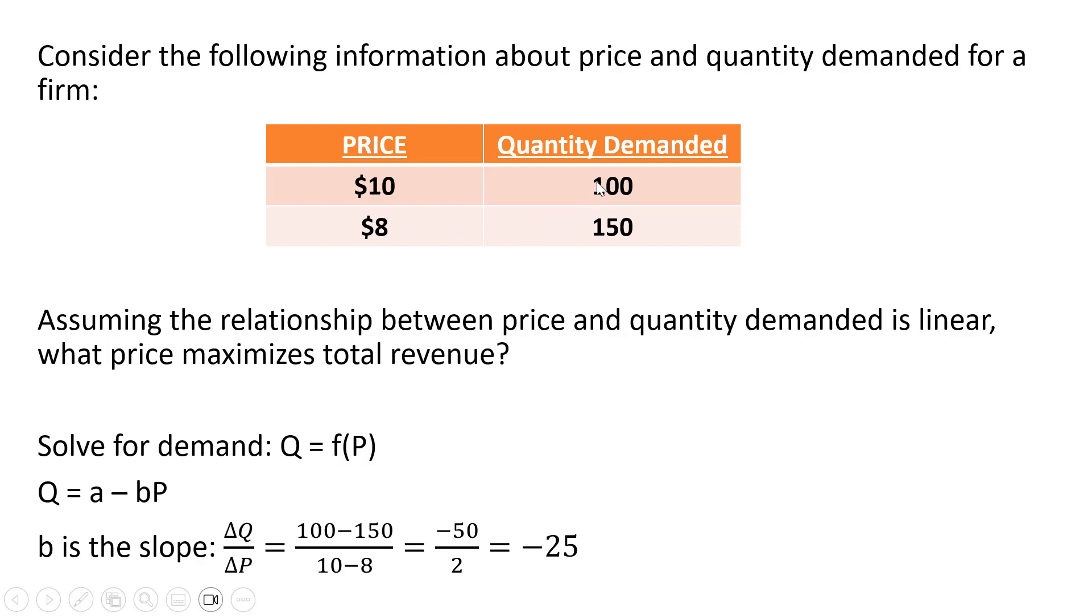We can take the change in quantity, 100 minus 150, and divide that by the change in price, 10 minus 8. So doing that math, we get a slope of minus 25.